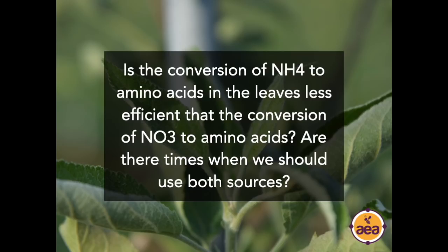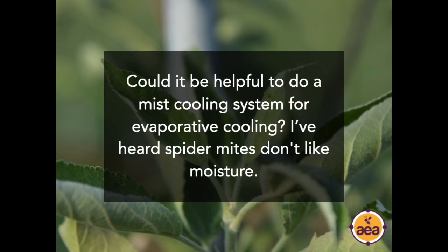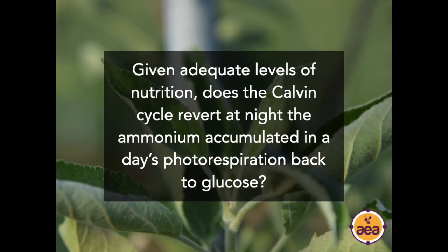Question from Jason Linman: is ammonium conversion to amino acids in the leaves less efficient than nitrate conversion — are there times we should use both sources? Ammonium conversion is actually more efficient than nitrate conversion. Nitrate conversion consumes a tremendous amount of energy from the plant — I consider it the most wasteful use of energy a plant can have. The bottom line is that we want plants to absorb 100 percent of their nitrogen in the form of amino sugars through the rhizophagy process described by Dr. James White. On mist cooling and moisture: what spider mites don't like is plants that are low in ammonium — when plants cool better without high ammonium levels, you don't have challenges with spider mites.